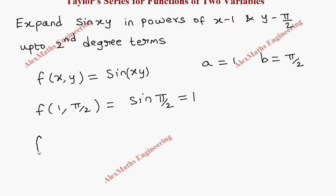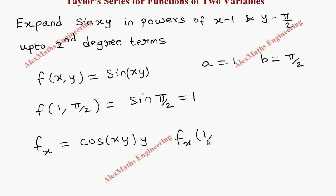Next, we find fx, the partial differentiation with respect to x. The derivative of sin is cos, so fx = cos(xy) · y. Now, fx(1, π/2): substituting gives cos(1 · π/2) = cos(π/2) = 0.